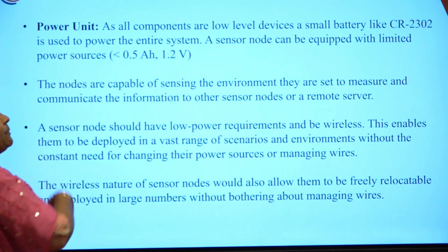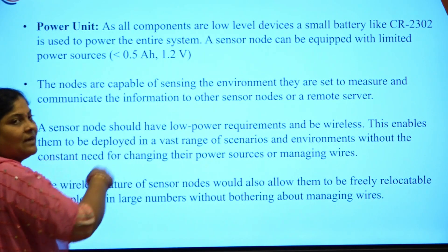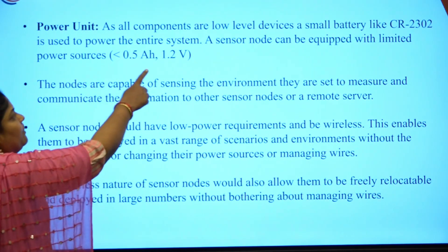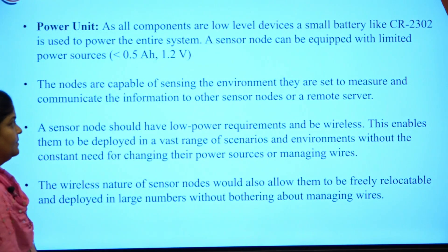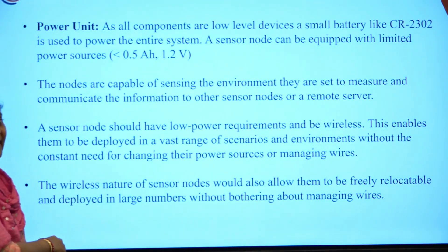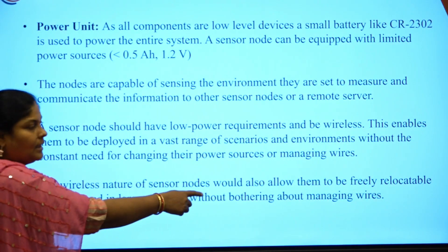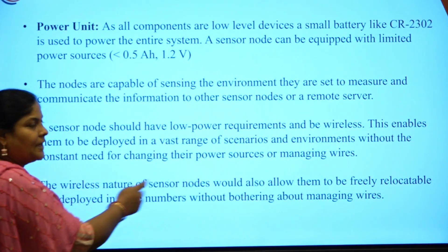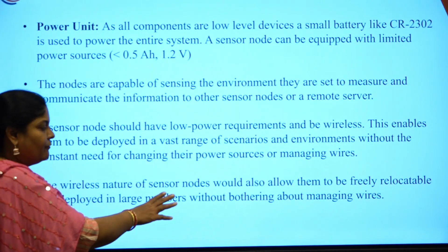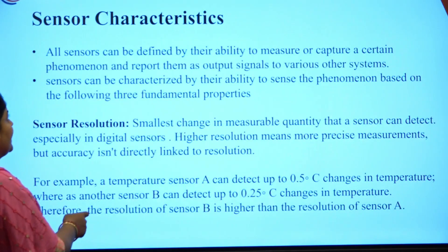The power unit consists of all components with low-level devices and needs a small battery to power up the entire system. These are the four components. The wireless nature of sensor nodes allows them to freely relocate and deploy in large numbers without worrying about managing wires.